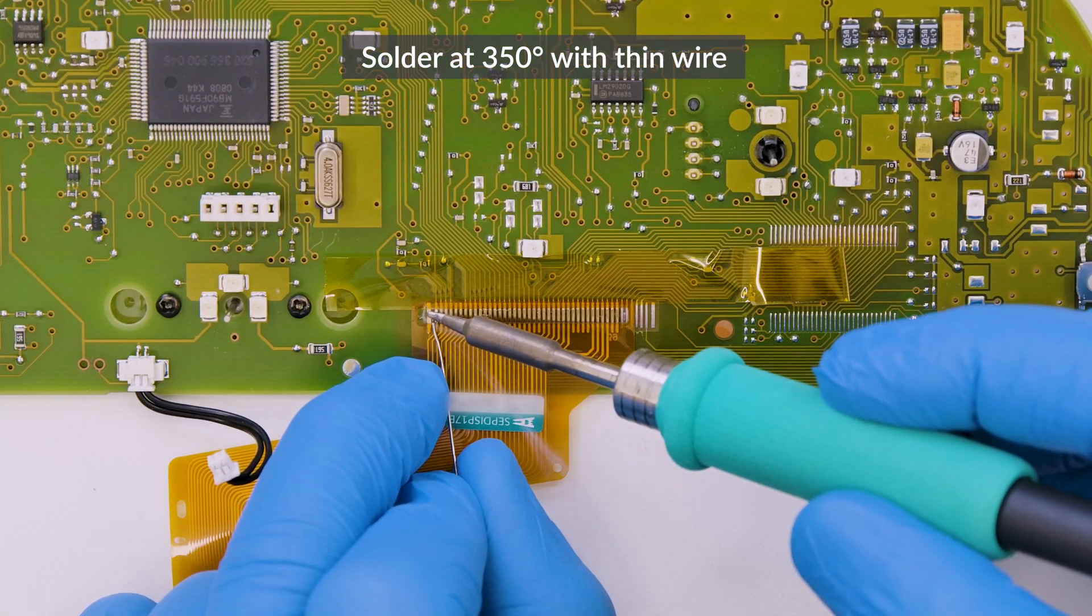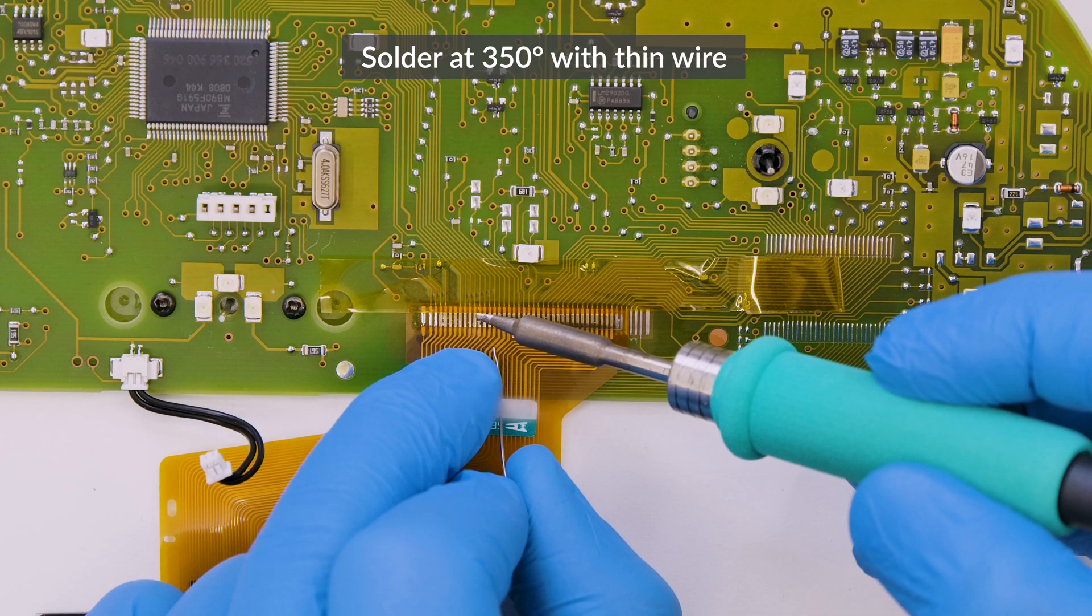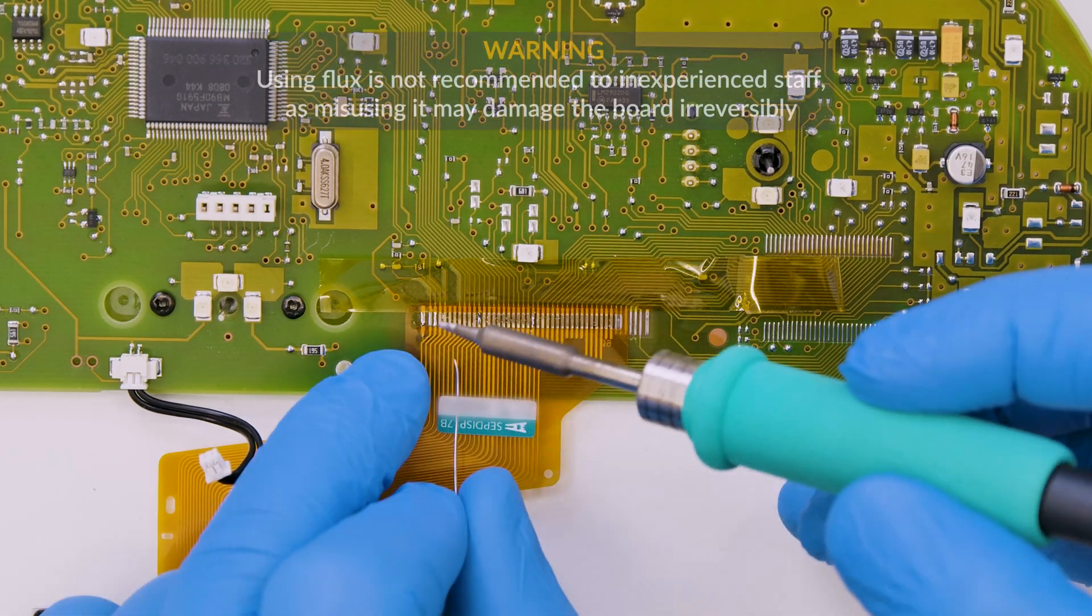Then, solder each pin, one at a time, with the soldering iron with conical tip at 350 degrees.